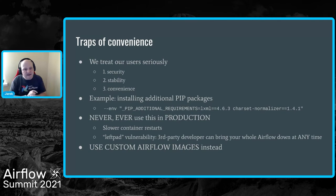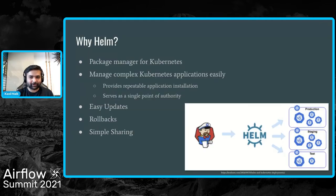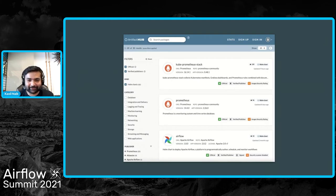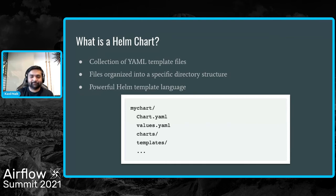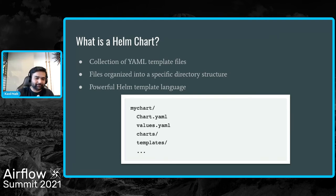You can use Docker Hub to find Docker images and Artifact Hub to find, install, and publish Helm packages. Here is an example screenshot of Artifact Hub, which already shows popular charts like Prometheus and the official Airflow chart. Now that you know what Helm is, let's go to Helm chart. Helm chart is nothing but a collection of YAML template files organized into a specific directory structure. The templates directory is for template files which become Kubernetes manifests. When Helm evaluates the chart, it sends all the files through the template rendering engine, collects the results, and sends them to Kubernetes. Chart.yaml contains metadata about the chart. Values.yaml contains all the information you can override. The Helm template language is very powerful and uses Go templating functions.